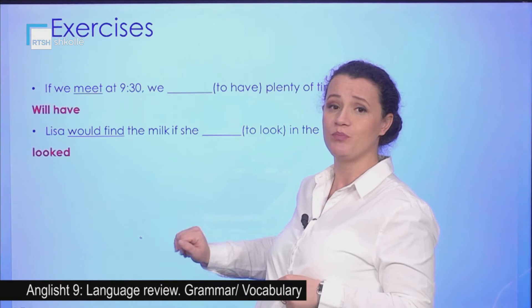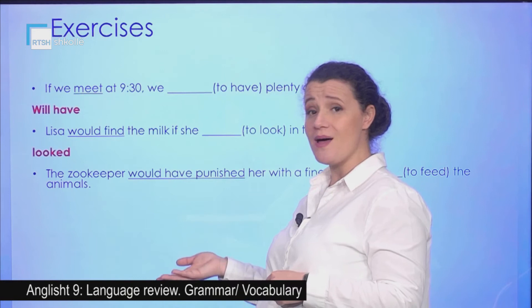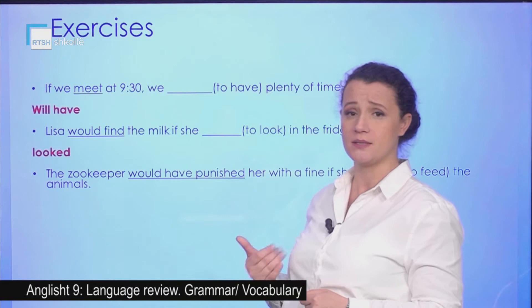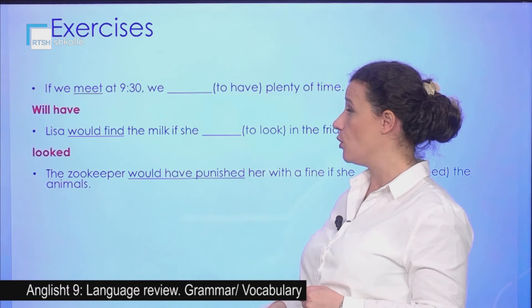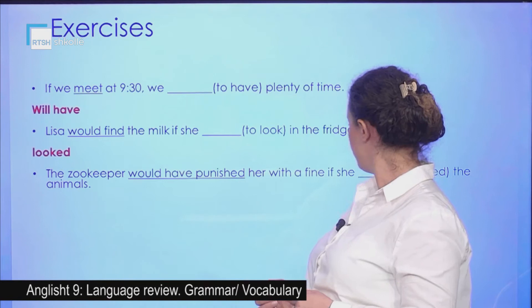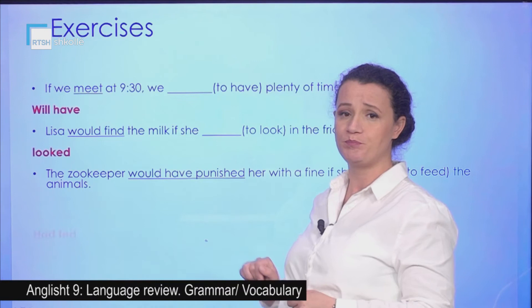Let's go with the third sentence. The zookeeper would have punished — so it is the main clause, and the if part comes next. Would have punished: that is would plus have plus the past participle. We have the third conditional now. So: the zookeeper would have punished her with a fine if she had fed — the past perfect — had fed the animals.